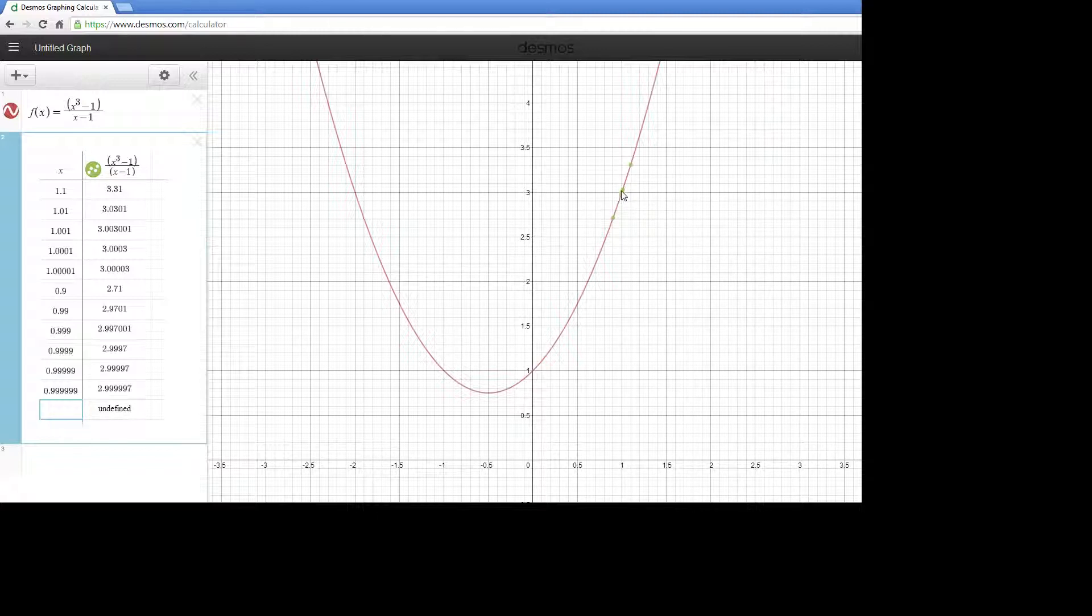So from the left, the limit would be 3; from the right, the limit would be 3, which also makes the two-sided limit equal to 3.